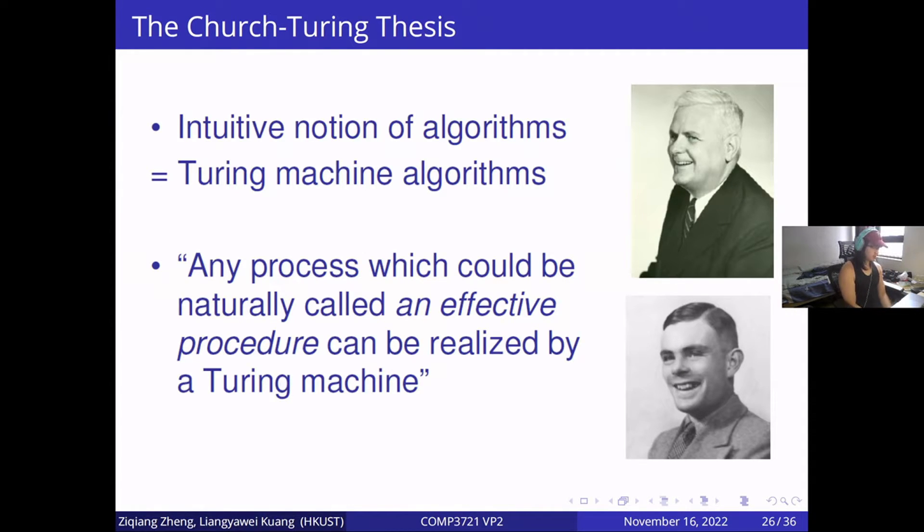To put it short, Church thinks the intuitive notion of algorithm is equal to Turing machine algorithm. In this case, every problem that can be solved by intuitive notion of algorithms can also be solved by a Turing machine. Turing states that any process which could be naturally called an effective procedure can be realized by a Turing machine. That's all for the first part. Let's welcome Zixiang Zheng for the second part.